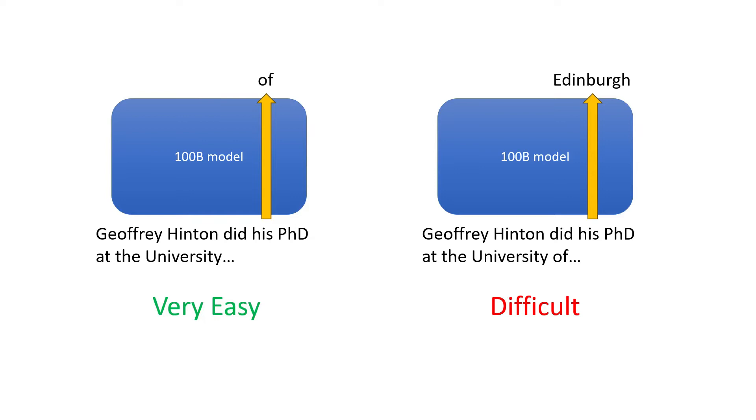So it would be nice if we could somehow use a smaller, say 1 billion parameter draft model to predict the easy tokens, and then use the big model only for the more difficult tokens.